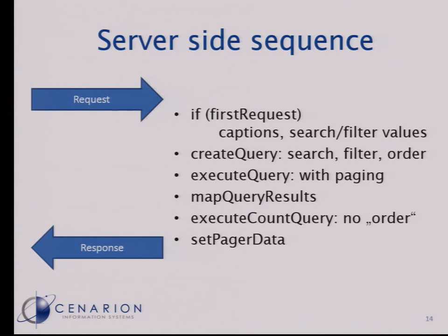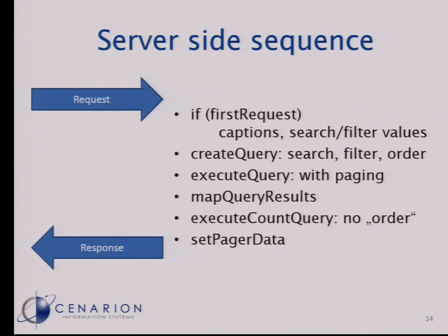On the server side the sequence looks like this. We receive a request. If it's the first request from the client, it doesn't know all the metadata, so we add the metadata to the result — the captions and the initial search and filter values. Then we create the database query, using any filters or search values from the client if provided. We execute that query with paging so we only get back 10 or 20 results from the database, whatever page size the user has selected. Then we map those query results to our table row object that the client tabular component can interpret.